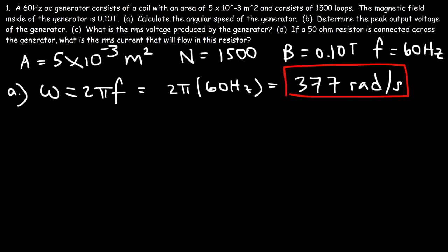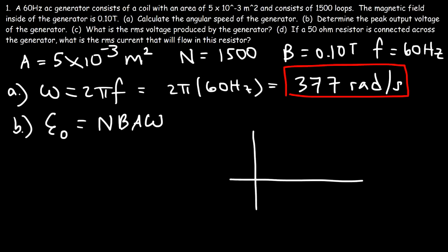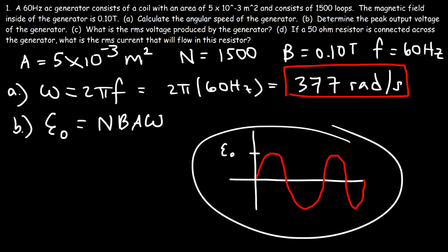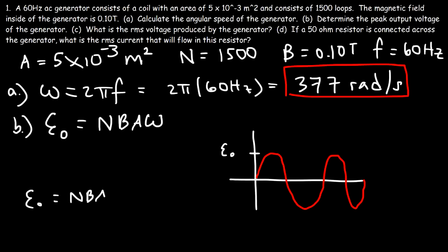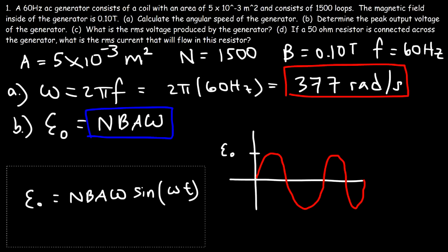Now let's determine the peak output voltage of the generator. The formula we need is: peak output voltage equals N·B·A times ω. For an AC generator we have a sinusoidal function that alternates, and the graph is described by the formula N·B·A·ω·sin(ωt). To calculate just the maximum EMF, we don't need the sine portion — since sine 90° equals 1, at its maximum we can replace sine with 1.